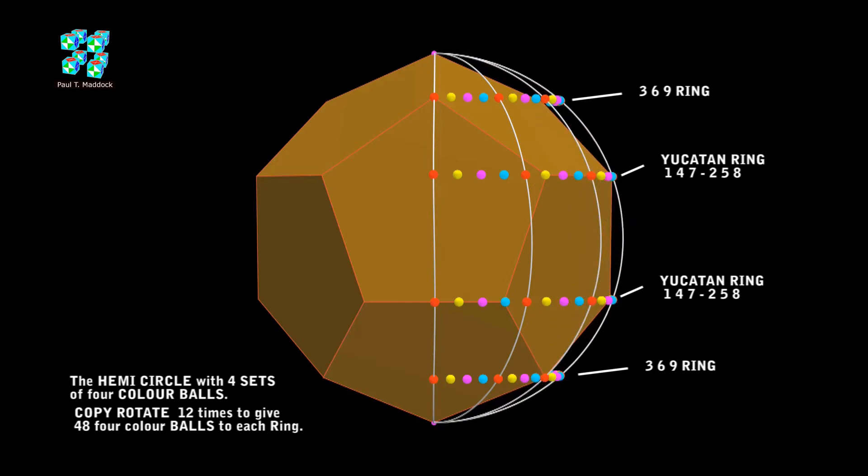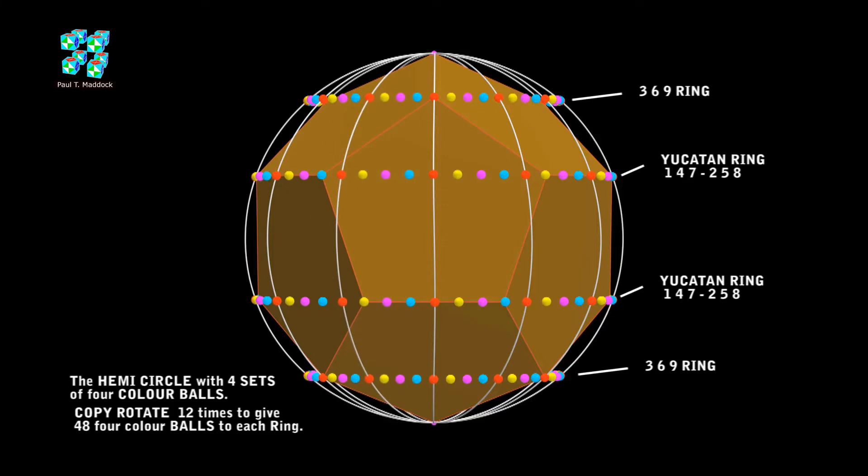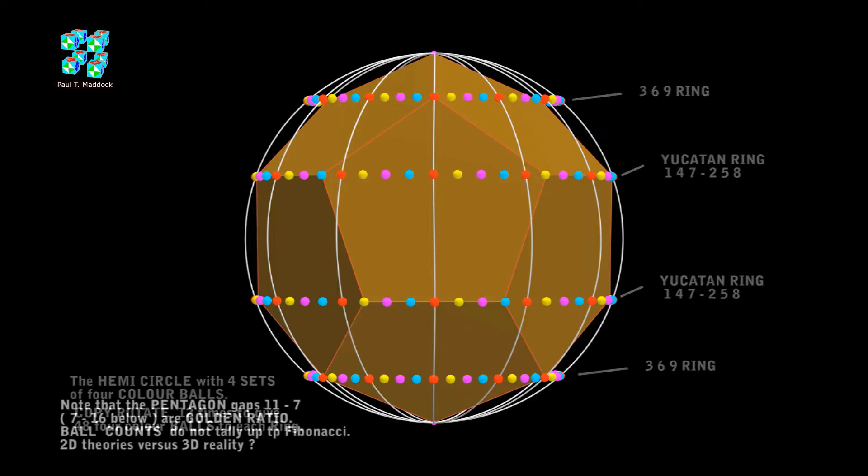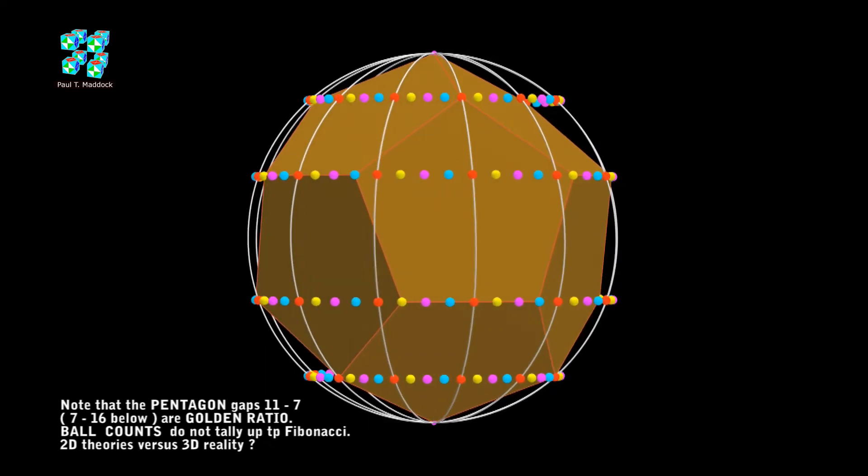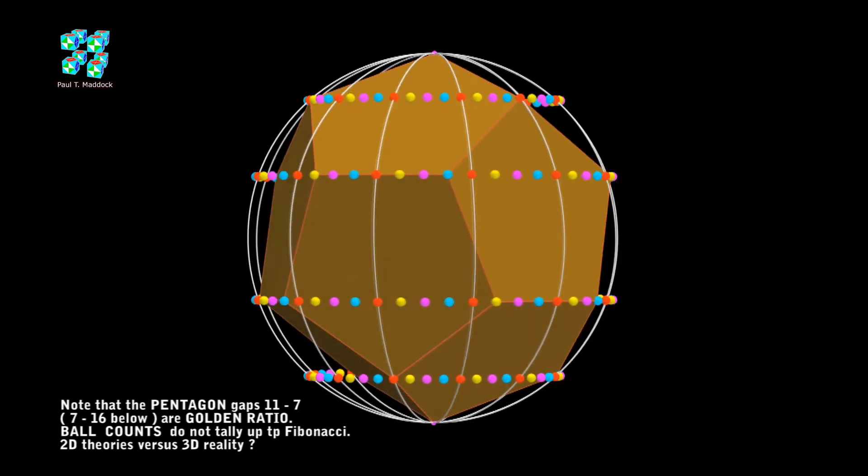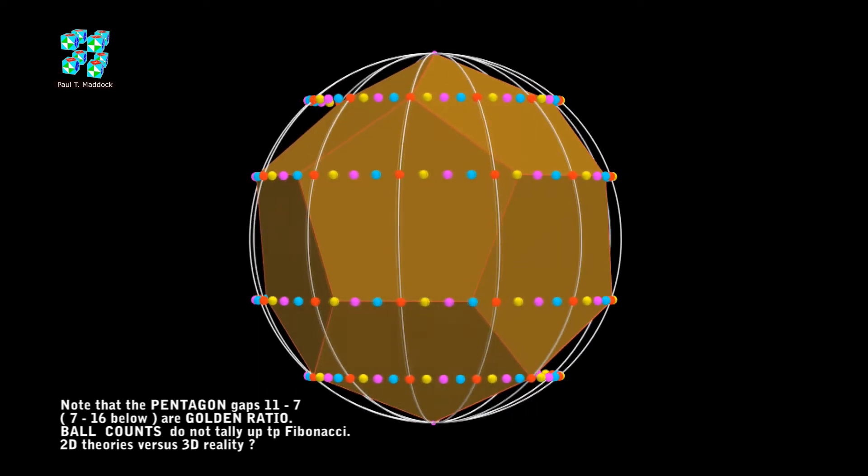Now if you look at that pentagon in the front, the widest part is a cube, the edge of a cube, and the shorter part is equal to exactly golden ratio. But the number of balls are different to Fibonacci. This is because it's spherical. The front pentagon shows 11 balls. We show 16 balls in the bottom pentagon. This is proof you need to work in three-dimension to get a correct answer.